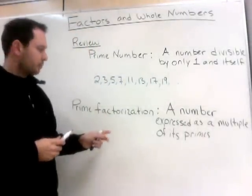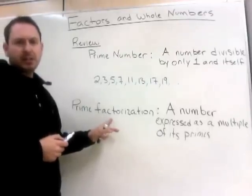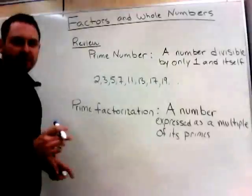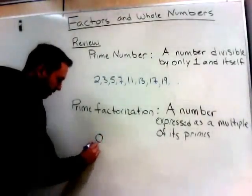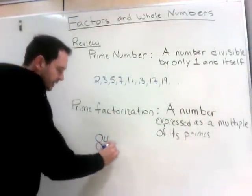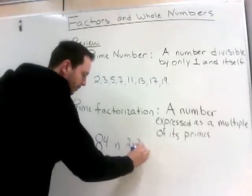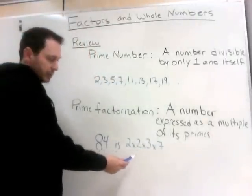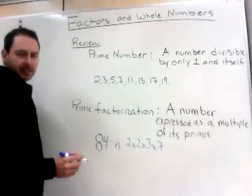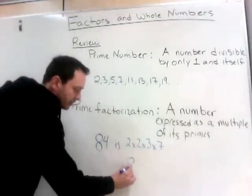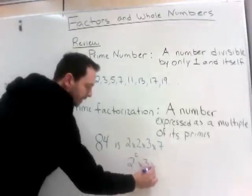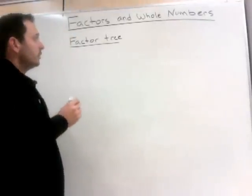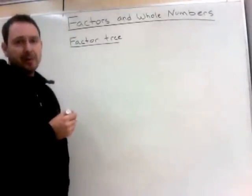Today we're also going to work on prime factorization. Prime factorization is when a number can only be expressed as a multiple of its primes. An example of this would be the number 84, which is 2 times 2 times 3 times 7. Notice 2, 2, 3, and 7 are all prime numbers. This can also be written with exponents: 2 squared times 3 times 7. Today we're going to use factor trees in order to factor our numbers into prime factorization.